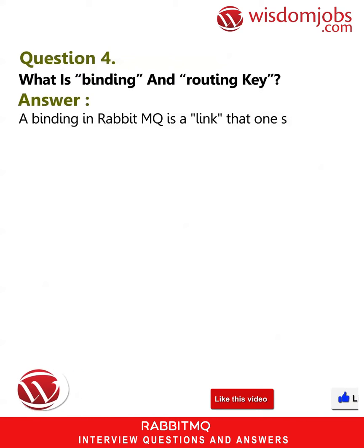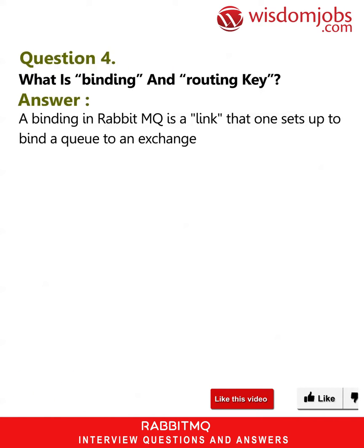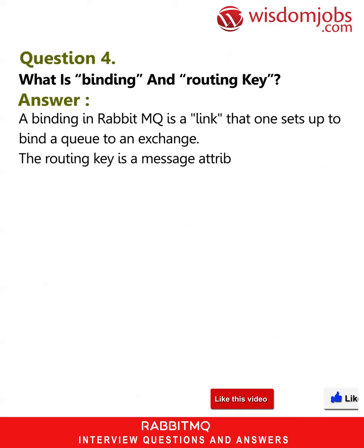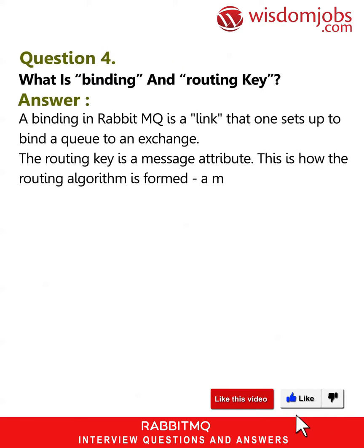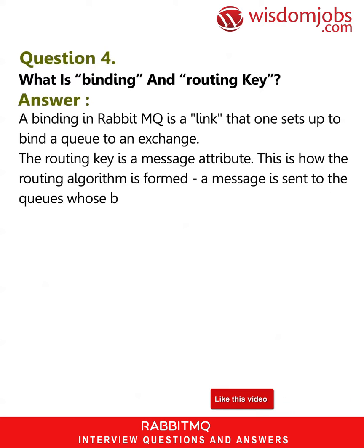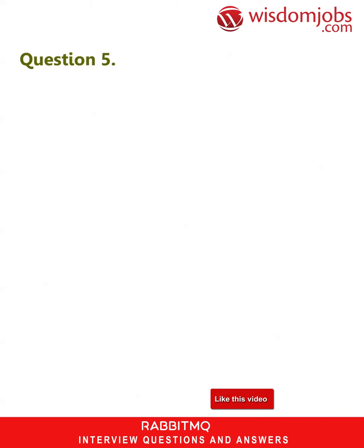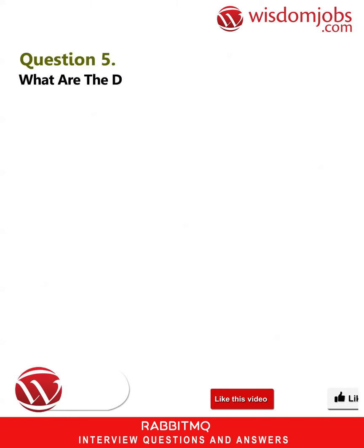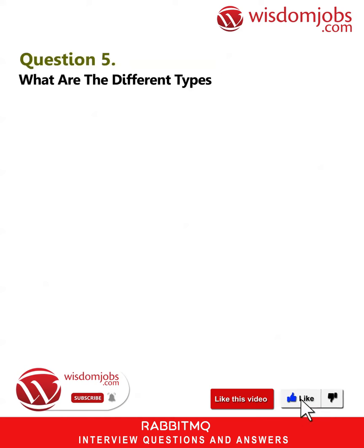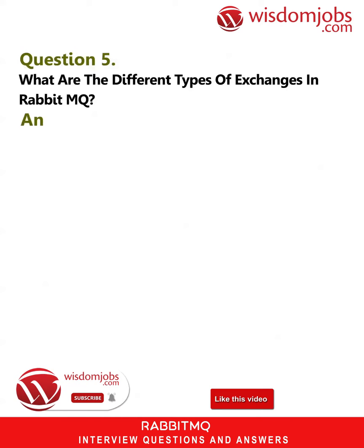Question 4: What is binding and routing key? Answer: A binding in RabbitMQ is a link that one sets up to bind a queue to an exchange. The routing key is a message attribute — this is how the routing algorithm is formed. A message is sent to the queues whose binding key exactly matches the routing key of the message.